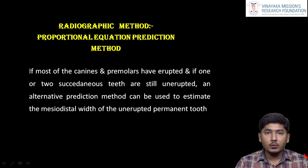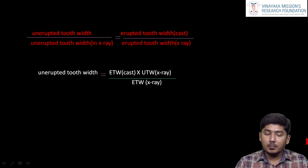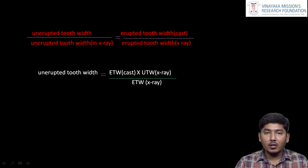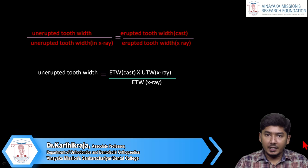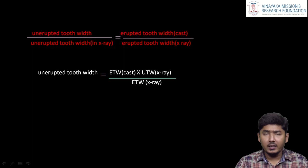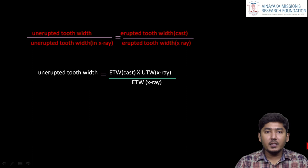Next is the radiographic method. This is done when few teeth have already erupted in one quadrant but not in the other. Based on the values of the erupted teeth, we can conclude whether we need a space maintainer or have to gain space for impacted teeth. The formula is: unerupted tooth width / unerupted tooth width in X-ray = erupted tooth width in cast / erupted tooth width in X-ray. Using this formula, the unerupted tooth width equals the erupted tooth width in cast multiplied by the unerupted tooth width in X-ray divided by the erupted tooth width in X-ray. Through this, we can evaluate the required space for the tooth to erupt into the dental arch.